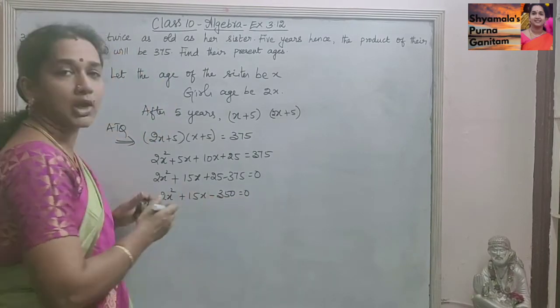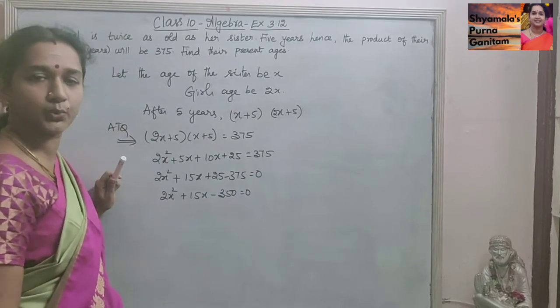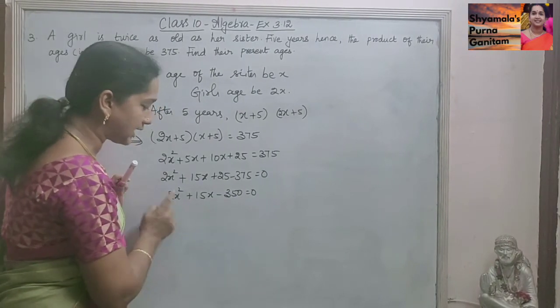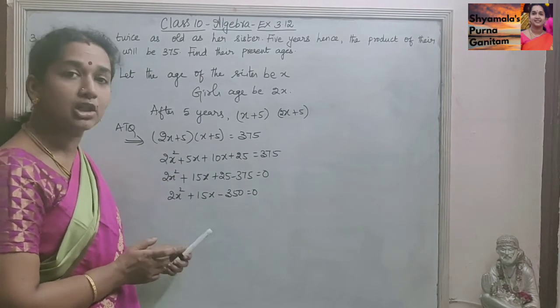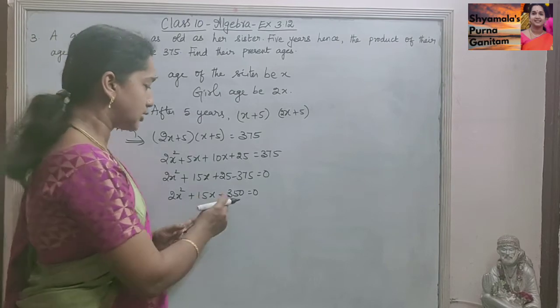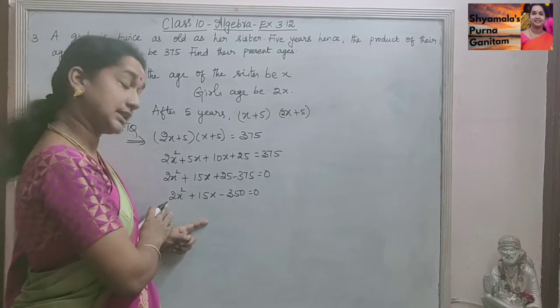So we got a quadratic equation. AX squared plus BX plus C is equal to 0 we got. So we will simplify this and find the value of X. So here 350 into 2 will be 700.